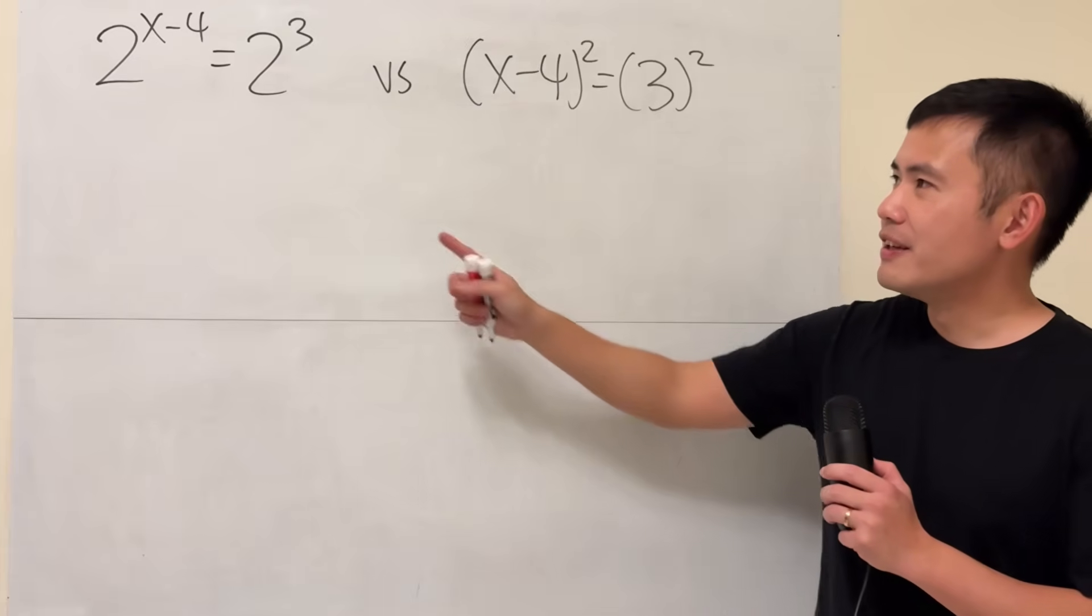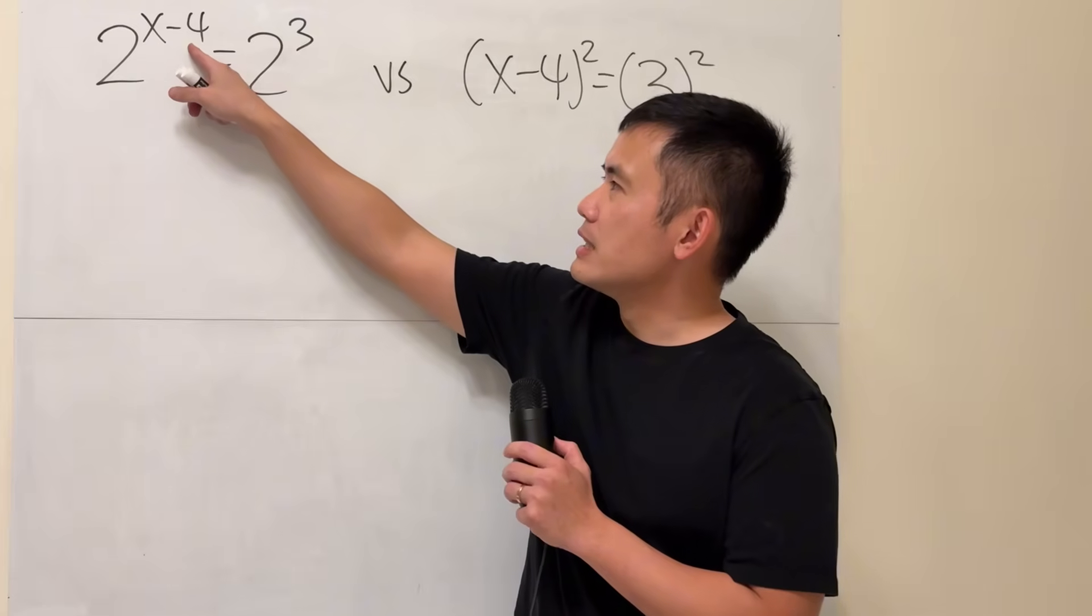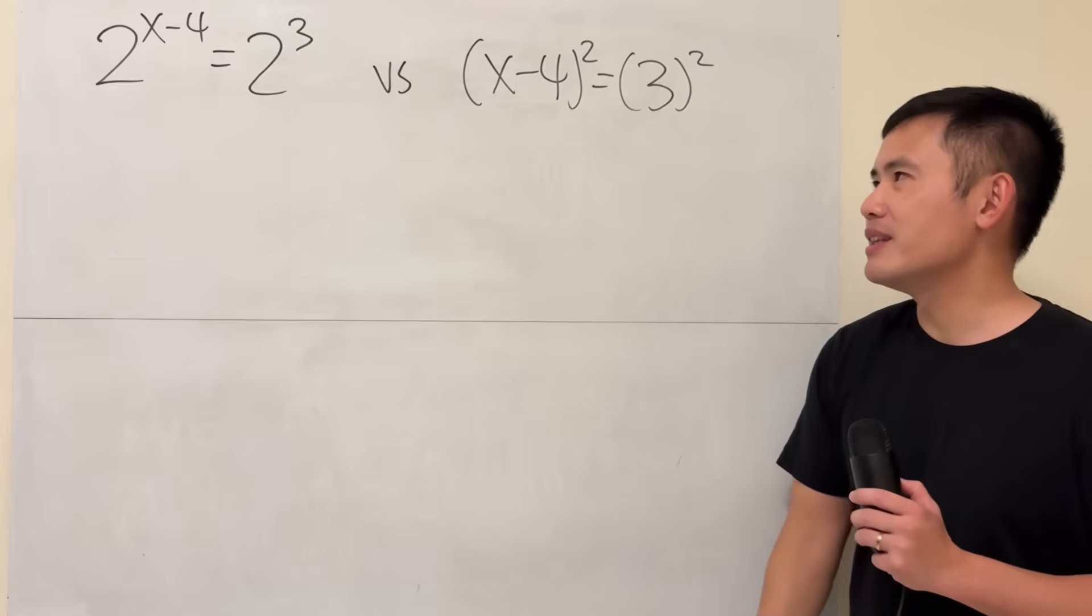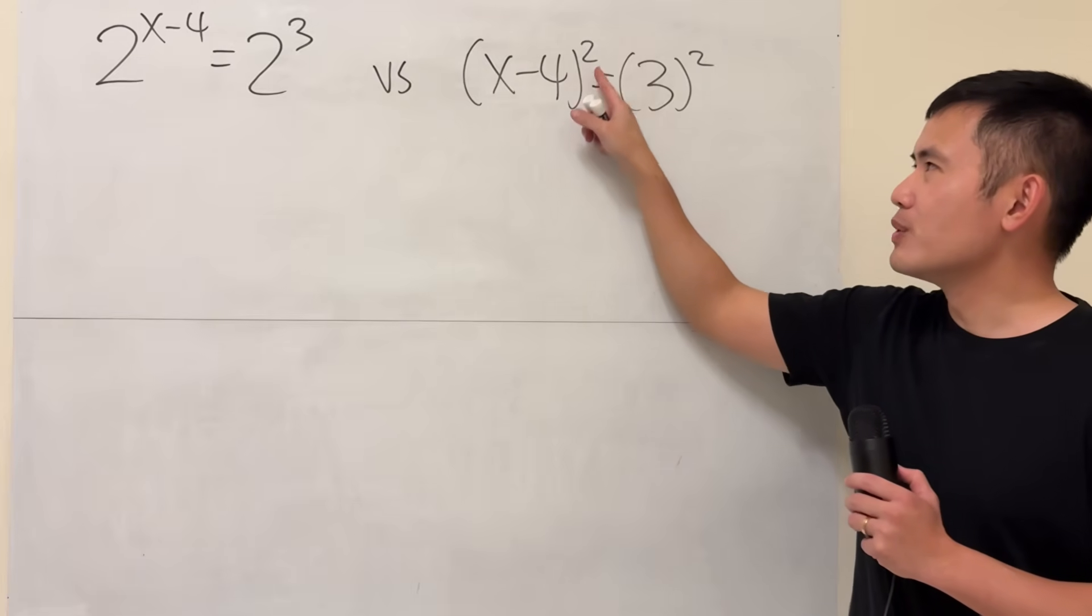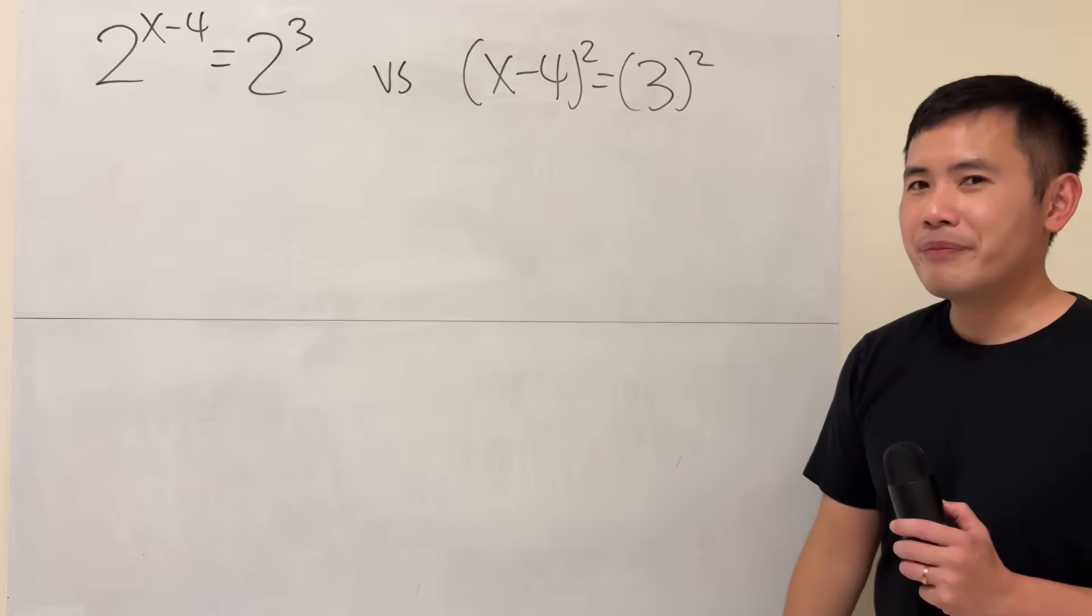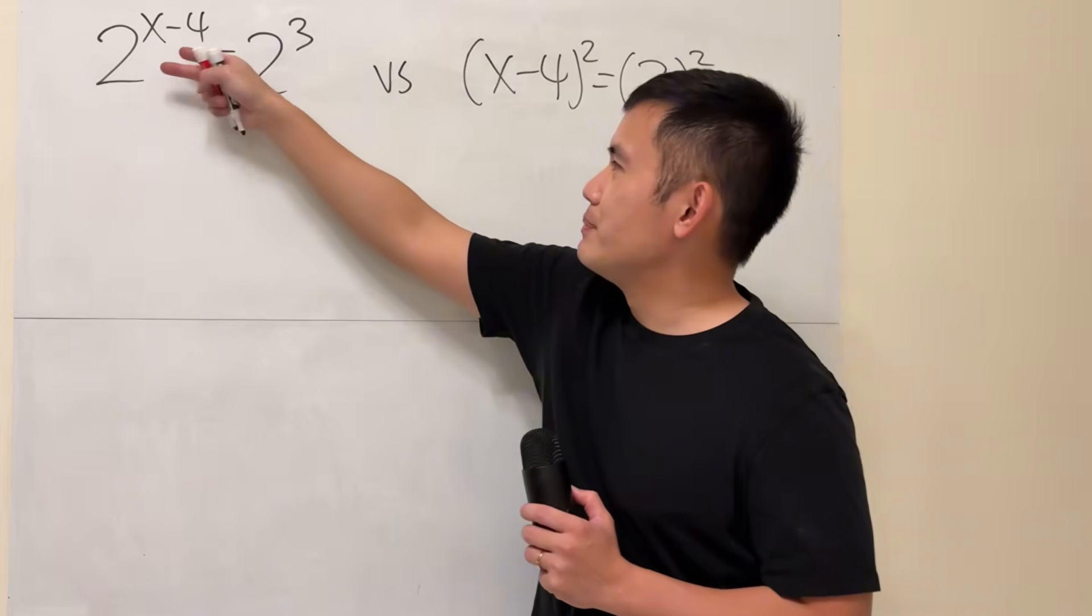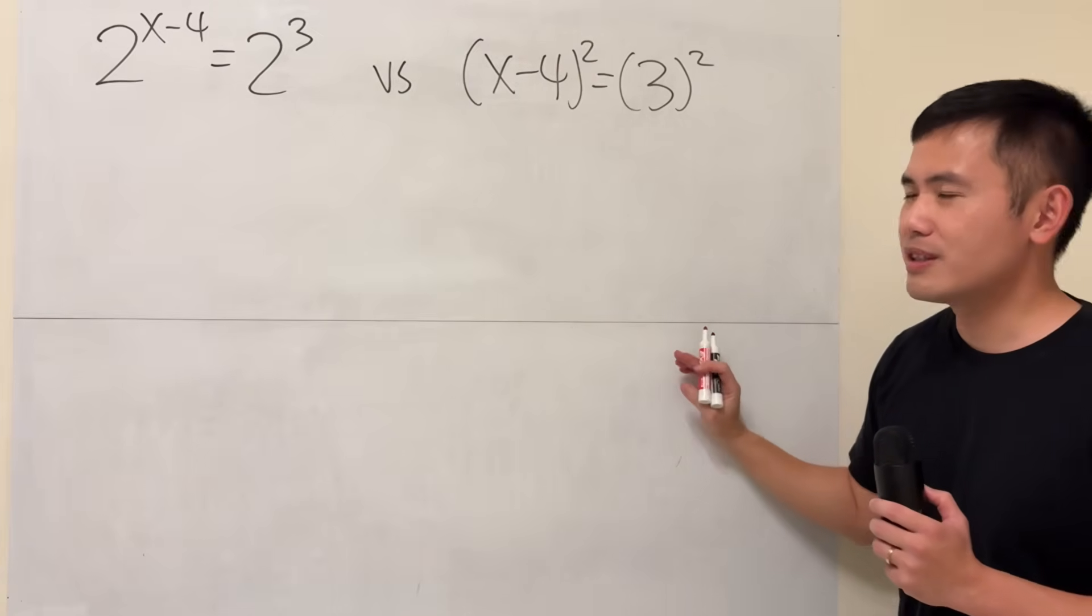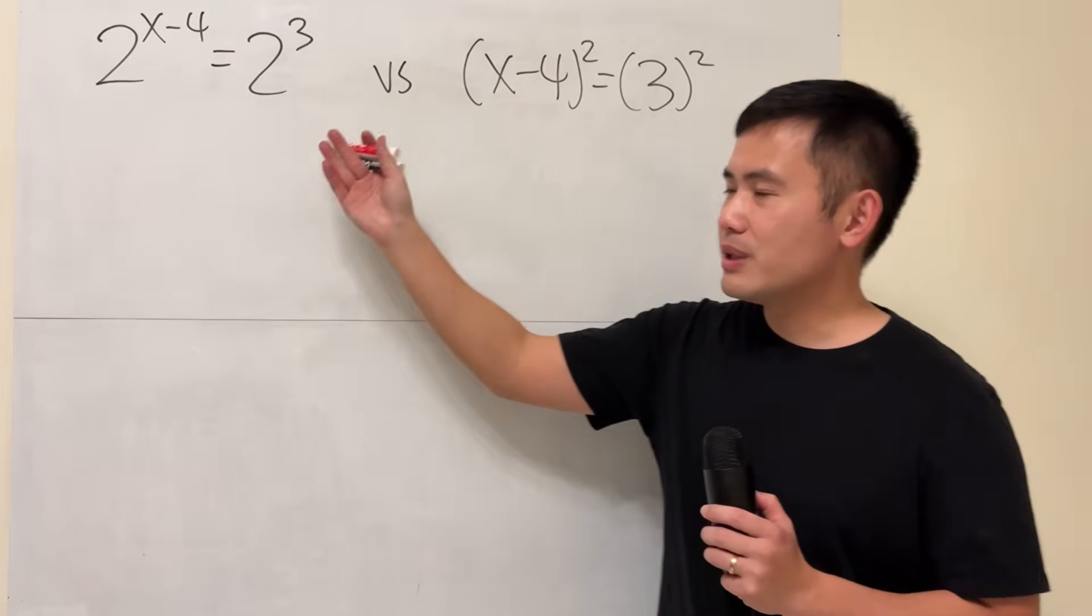Here we have two equations on the board. The first one is 2 to the x minus 4th power being equal to 2 to the 3rd power. And the second one is x minus 4 to the 2nd power being equal to 3 to the 2nd power. It looks like I just flipped the position, huh? So what's so interesting about this?